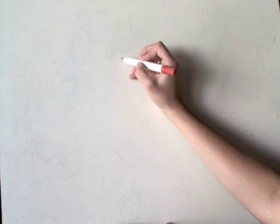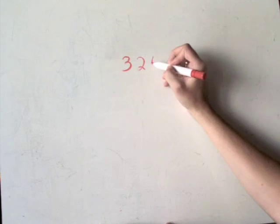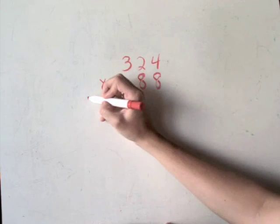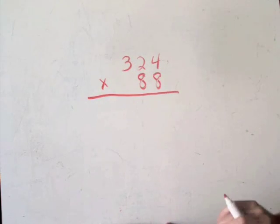If we move on to even larger numbers than this, let's say a three-digit number. 324 times 88. You're going to really see the pattern here.